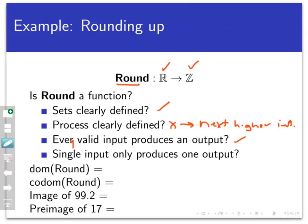The domain of the rounding function is the set of real numbers. The co-domain of the rounding function is the set of integers — that's the set on the receiving end of the arrow. So we have the co-domain and the domain well defined.